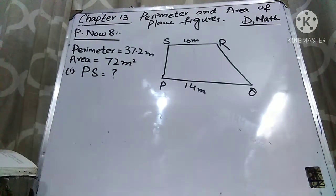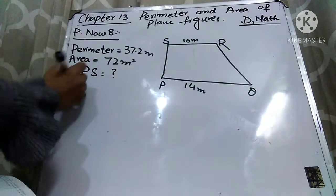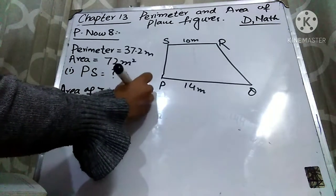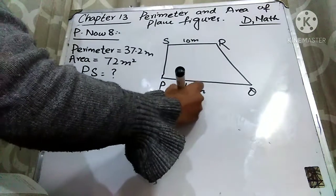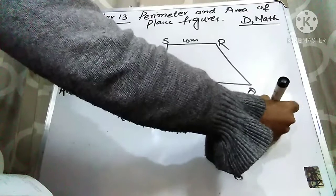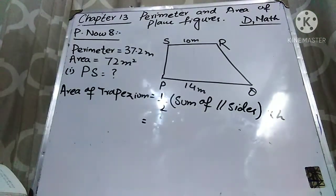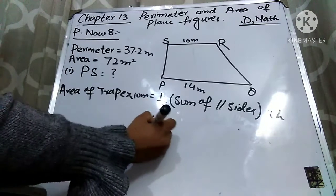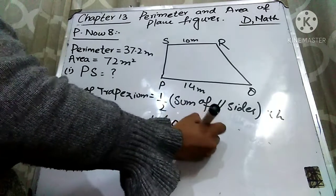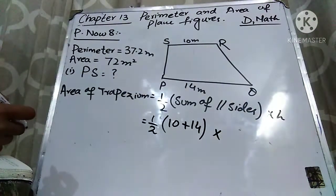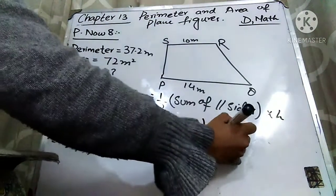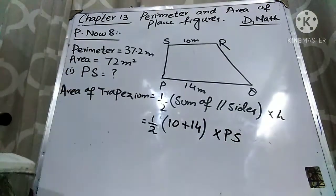I will use the formula of the area to find out the length of PS. The formula to find out the area of a trapezium is half, sum of parallel sides, multiply by height. So I am going to write down the two parallel lines, and PS is the required height.